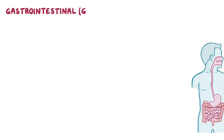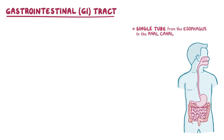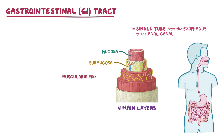The gastrointestinal or GI tract extends as a single tube from the esophagus all the way to the distal portion of the anal canal. Although different parts of the tract may appear to have very different structures and functions, the wall still maintains four main layers all throughout the GI tract: the mucosa, submucosa, muscularis propria, and either an outer serosa or adventitia.